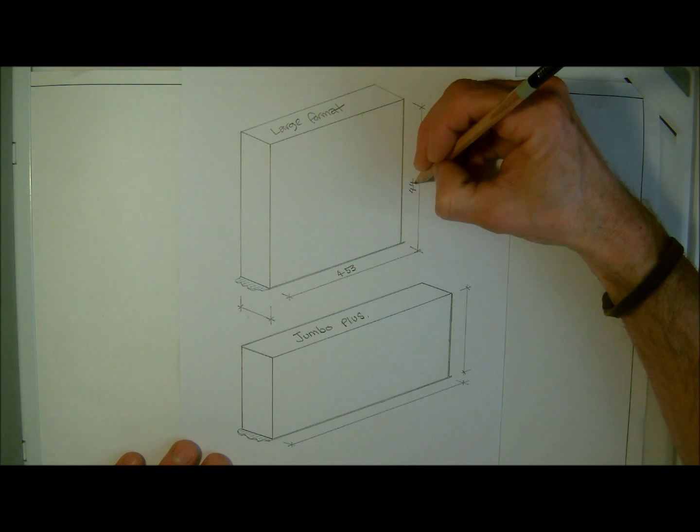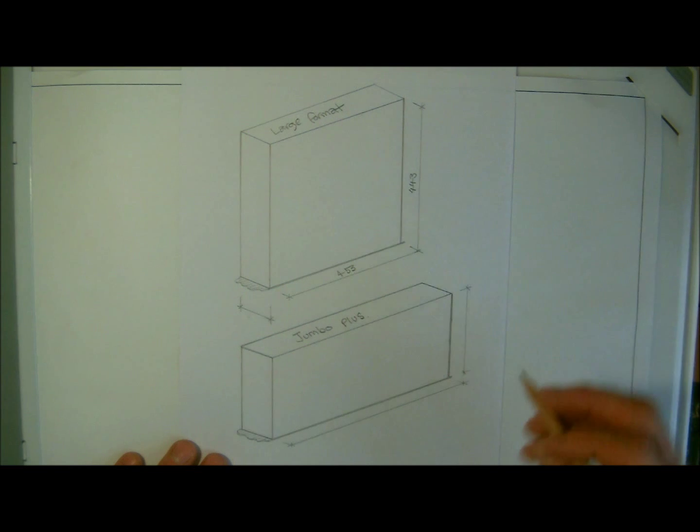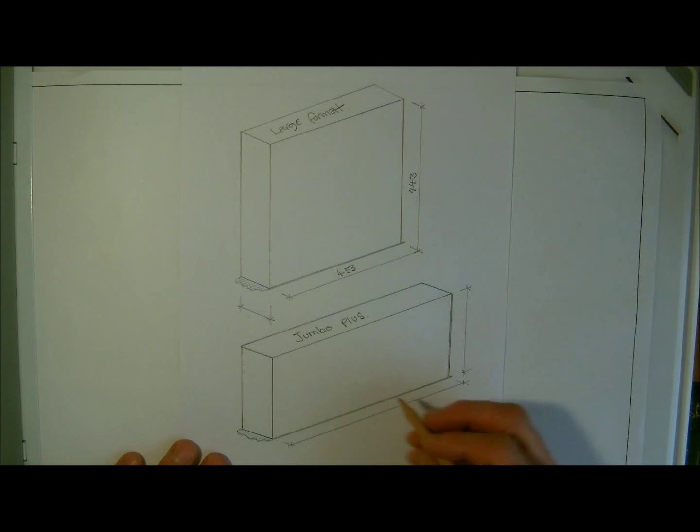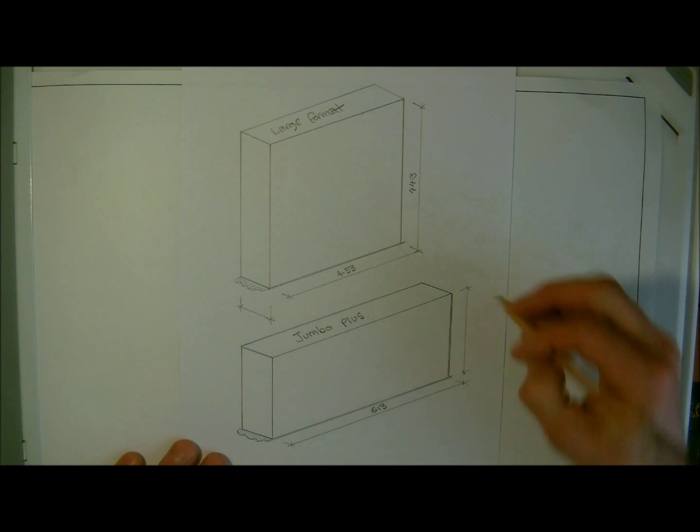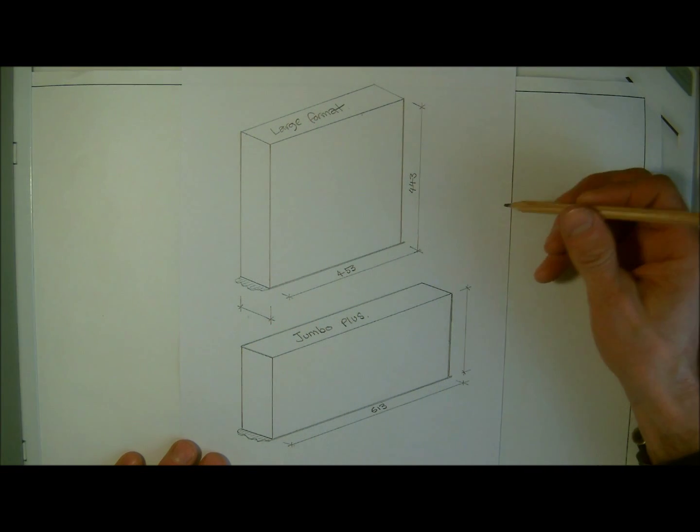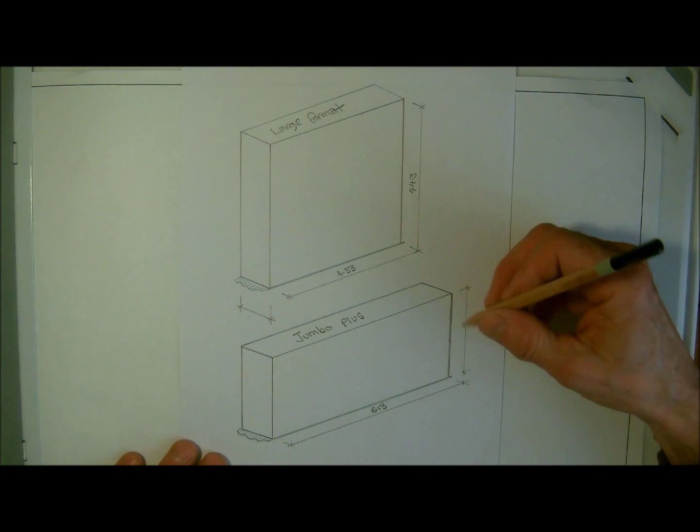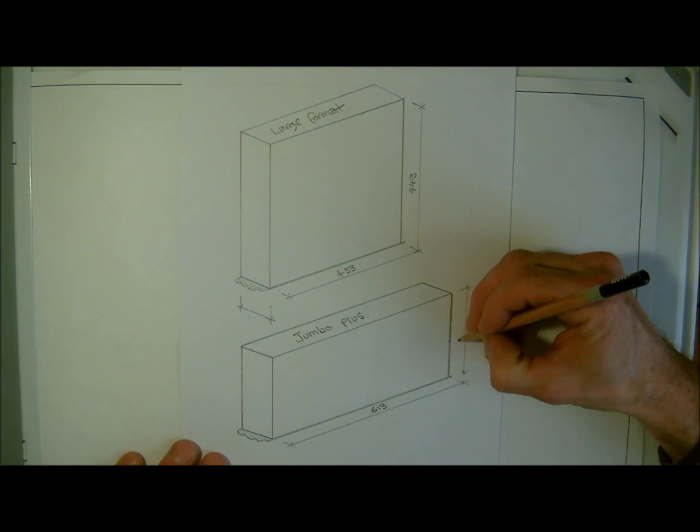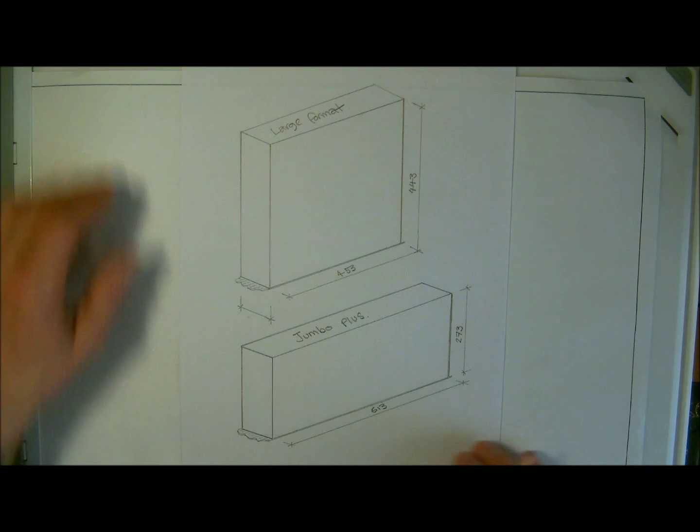The jumbo plus, these again are another 610 block, so with the joint they're going to be 613. And the height, they're 270 high, so not a normal standard size courseable block. They're 270, so with the joint that we're going to have in the thin joint, they'll be 273.